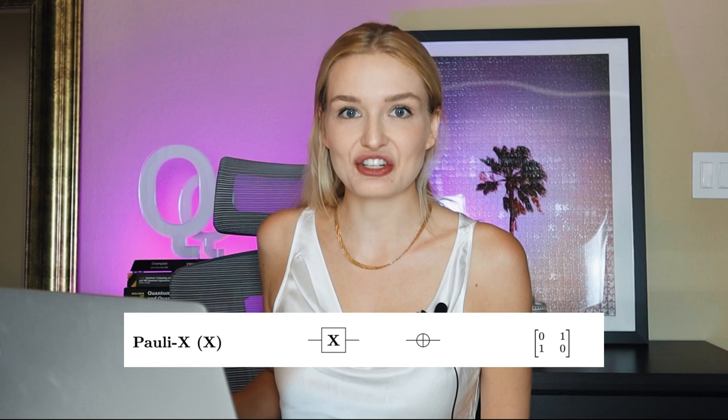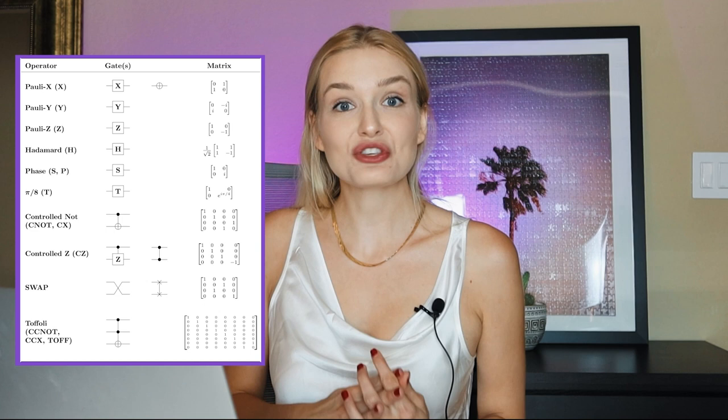The trick is that Bob can only bit flip the qubit, which means apply an X gate, while Alice can apply any gate that she wants. And that includes the Hadamard gate, which is a key concept in quantum information science. What the Hadamard gate does is actually apply a perfect superposition to a qubit, which means that when you measure that qubit after a Hadamard gate has been applied to it it has a 50% chance of being in the zero state and a 50% chance of being in the one state.